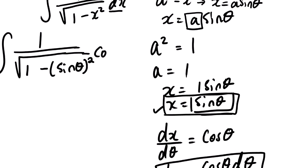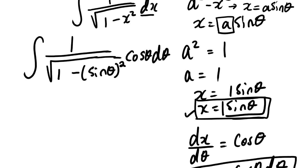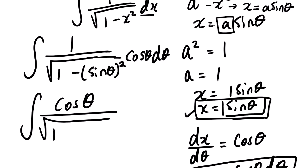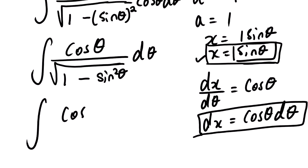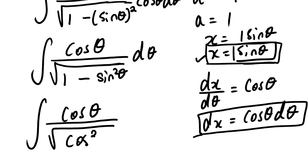After substitution we have cos theta d theta in the numerator, and we no longer have the x variable. This gives us cos theta d theta over the square root of 1 minus sine squared theta d theta.